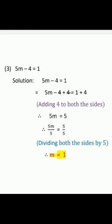Third equation: 5m minus 4 equals 1. Remove minus 4 by adding 4 to both sides: 5m minus 4 plus 4 equals 1 plus 4. Minus 4 and plus 4 cancel, giving 5m equals 5. Divide both sides by 5: 5m/5 equals 5/5, so m equals 1.